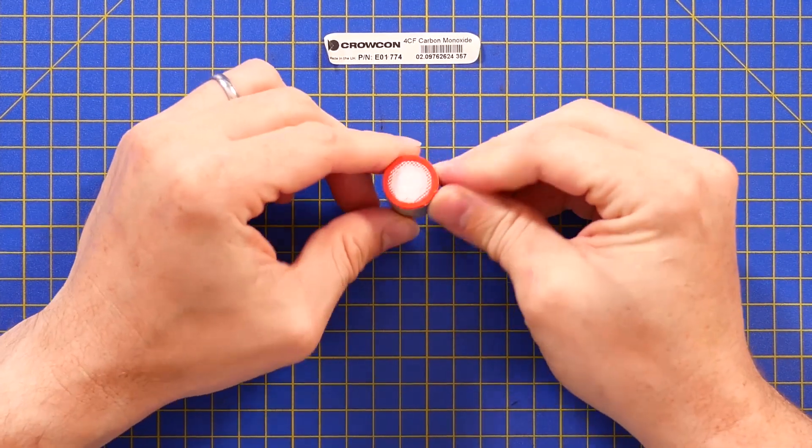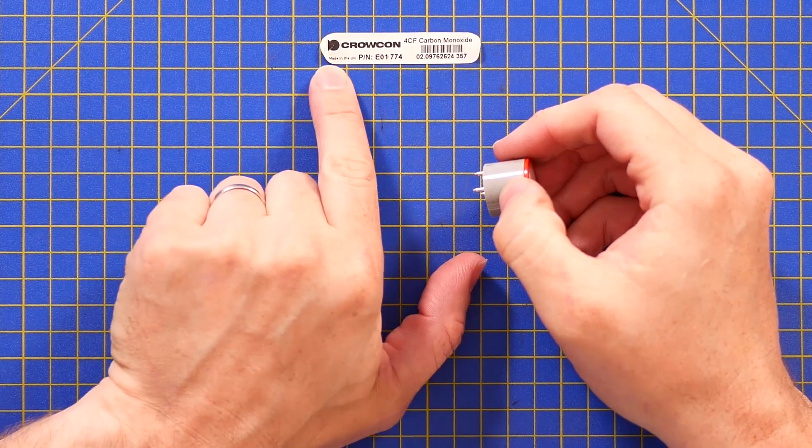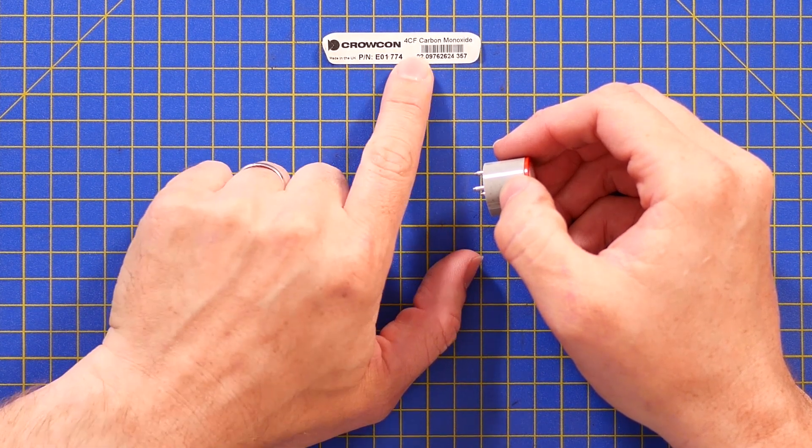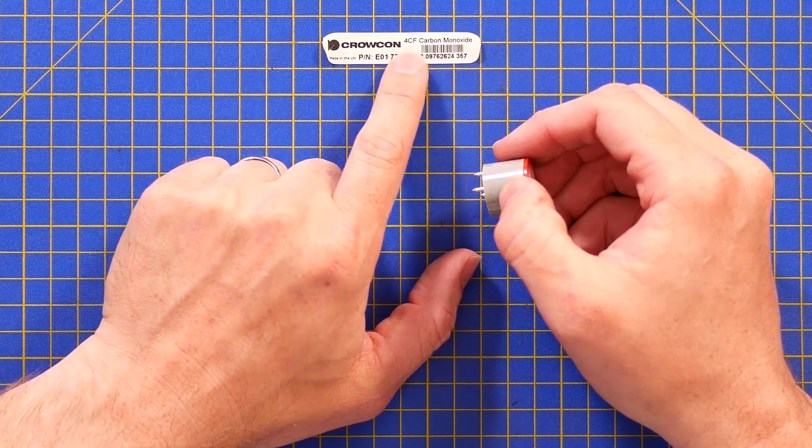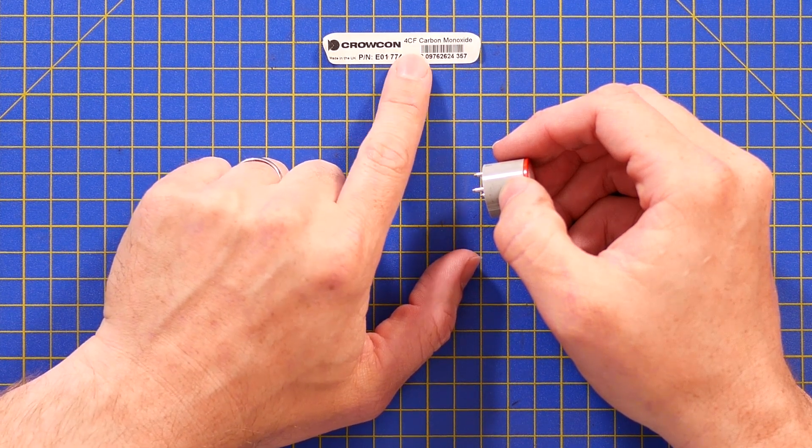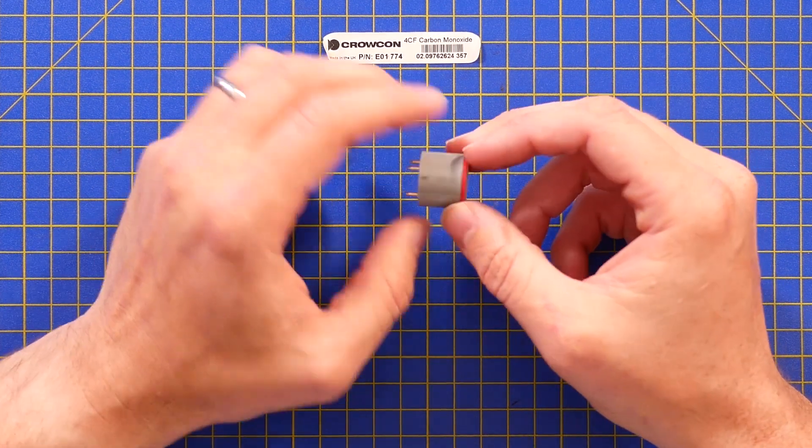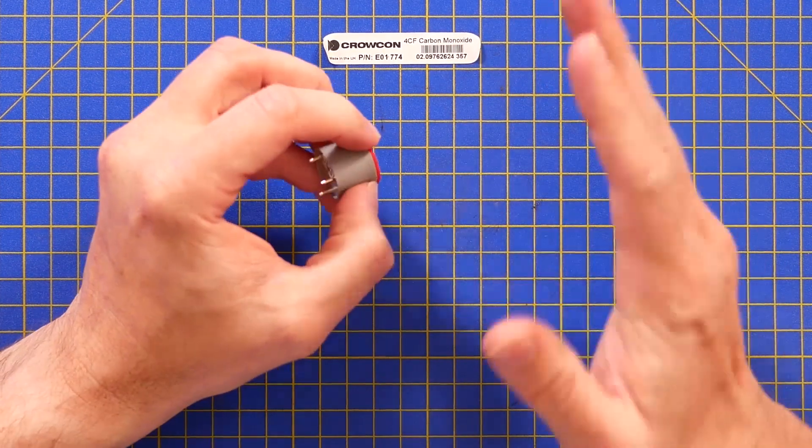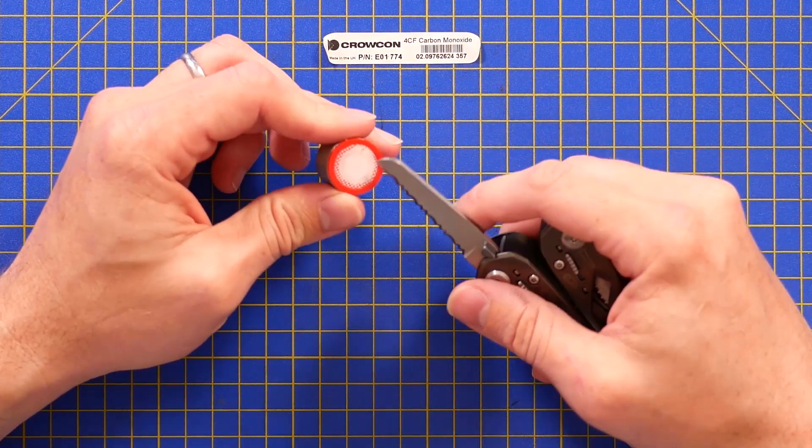Our carbon monoxide sensor is... I'm unlikely to get any data on this based on Crowcon. That part number is almost invariably going to be an internal one. And I don't think 4CF carbon monoxide actually means anything significant. I think that's probably going to be their model number or revision number. I could be wrong, but I don't think that means anything significant. Now it will be interesting to find out what type of detector this is.